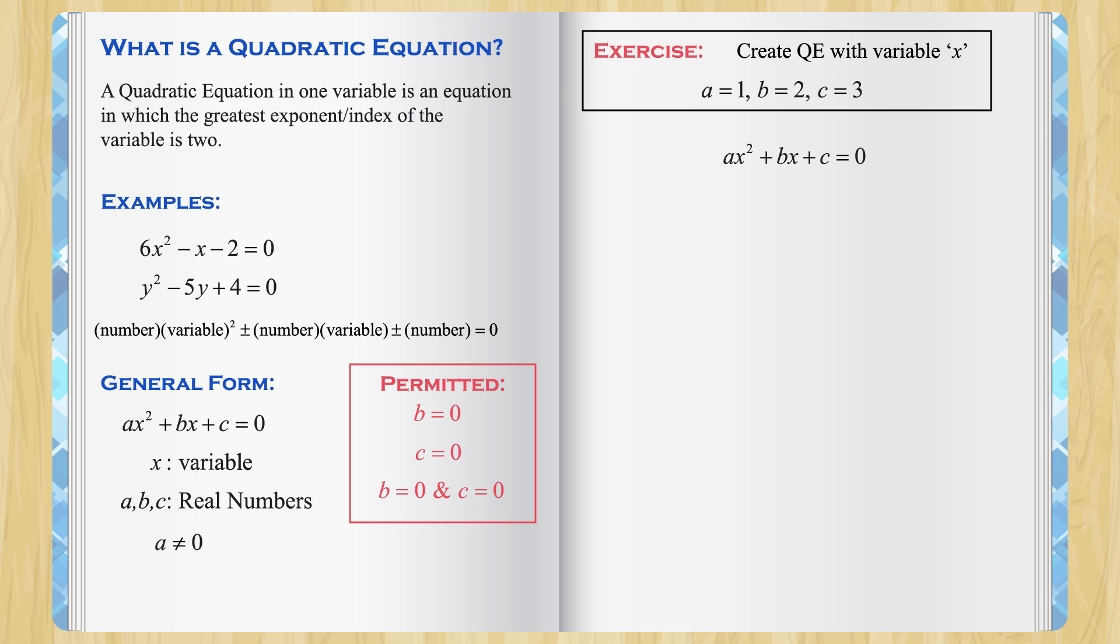a is supposed to be 1. So, let's switch that out. b is supposed to be 2 and c is supposed to be 3. And well, that is the final answer.